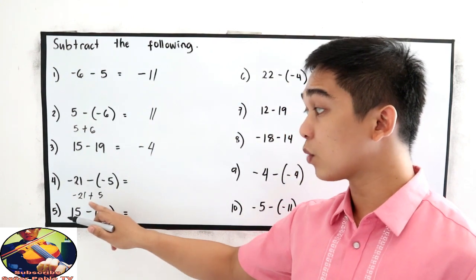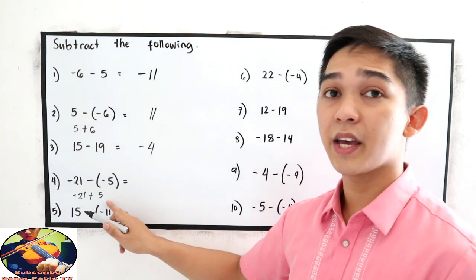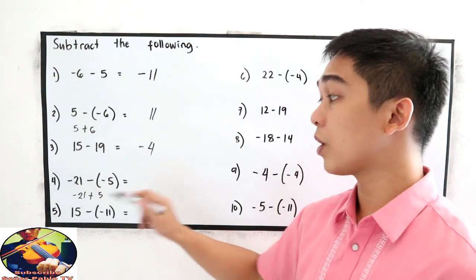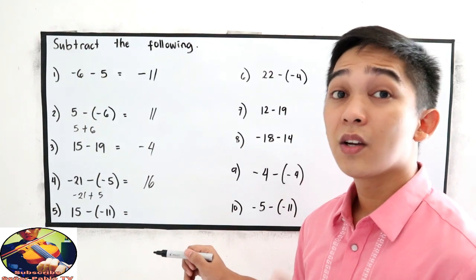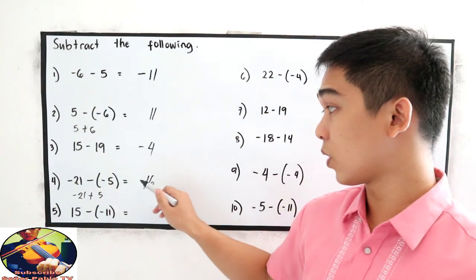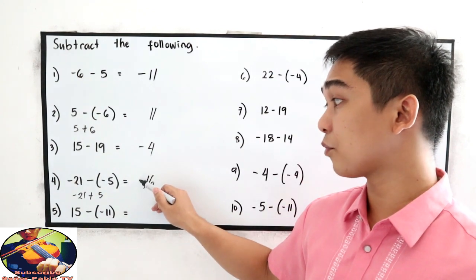So that is negative 21 plus 5, unlike sign, so subtract the numbers, 21 minus 5 is 16. Copy the sign of the greater absolute value, so 21. The sign of negative 21 is negative.